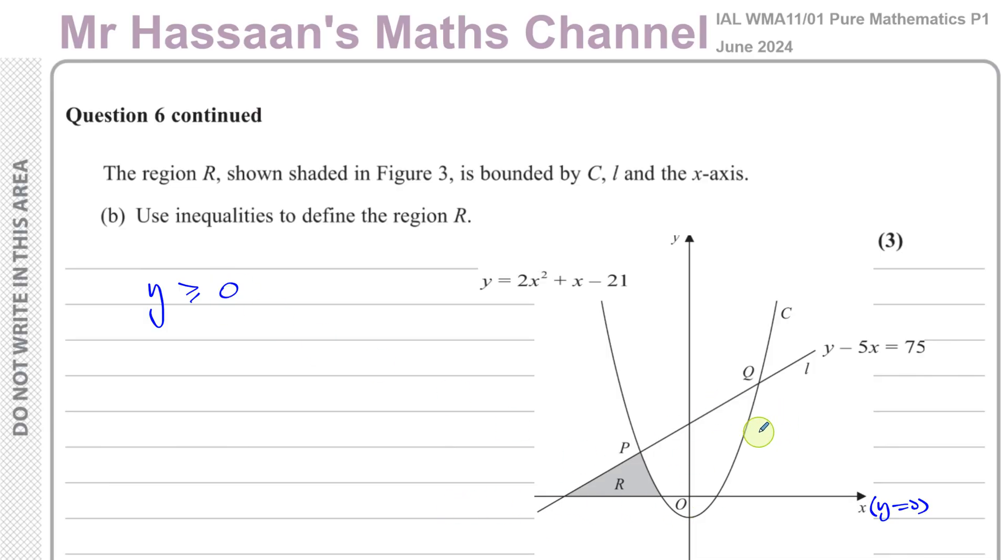And the region R is below this line, so it's where y minus 5x is less than or equal to 75. You could test some points if you want to, but it's pretty simple. Basically, if the y is on the left side of the inequality and it's a positive coefficient, you follow the sign. If it's below the line, you say less than. If it's above the line, you say greater than. So there's no problem just to write y minus 5x is less than or equal to 75. You could even write if you want y is less than or equal to 5x plus 75.